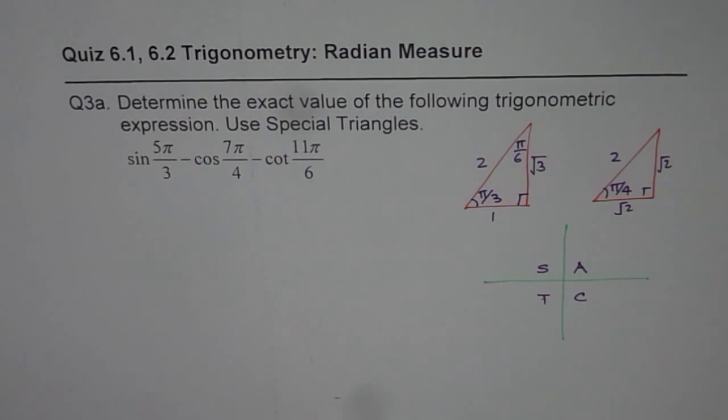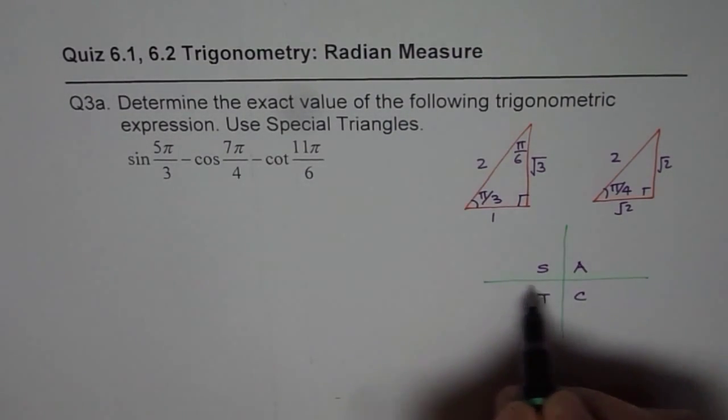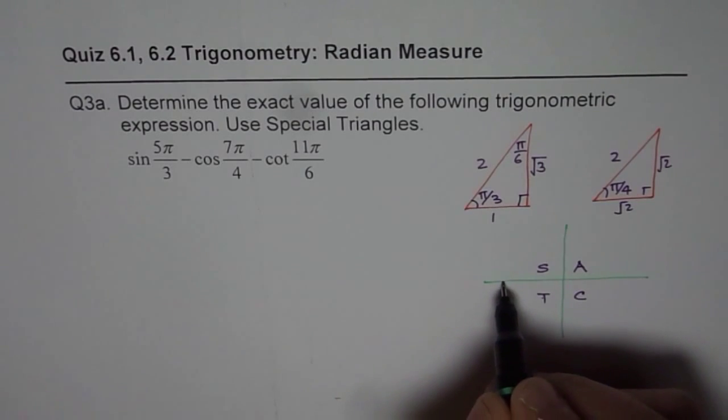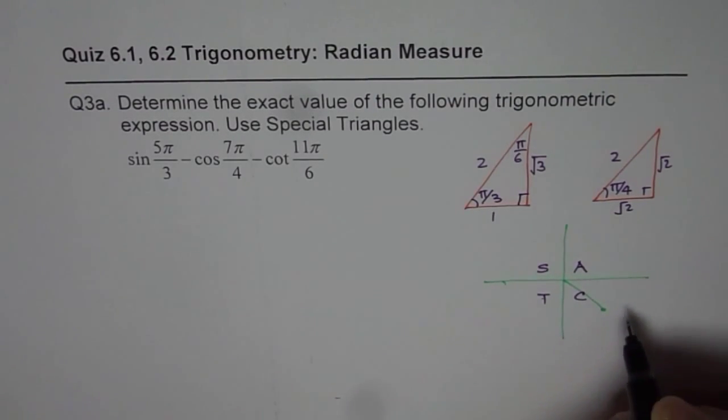Let's begin by sine 5π/3. 5π/3 means this is π into 3 portions and then 6 portions. So, we are kind of here. So, it is 5π/3.